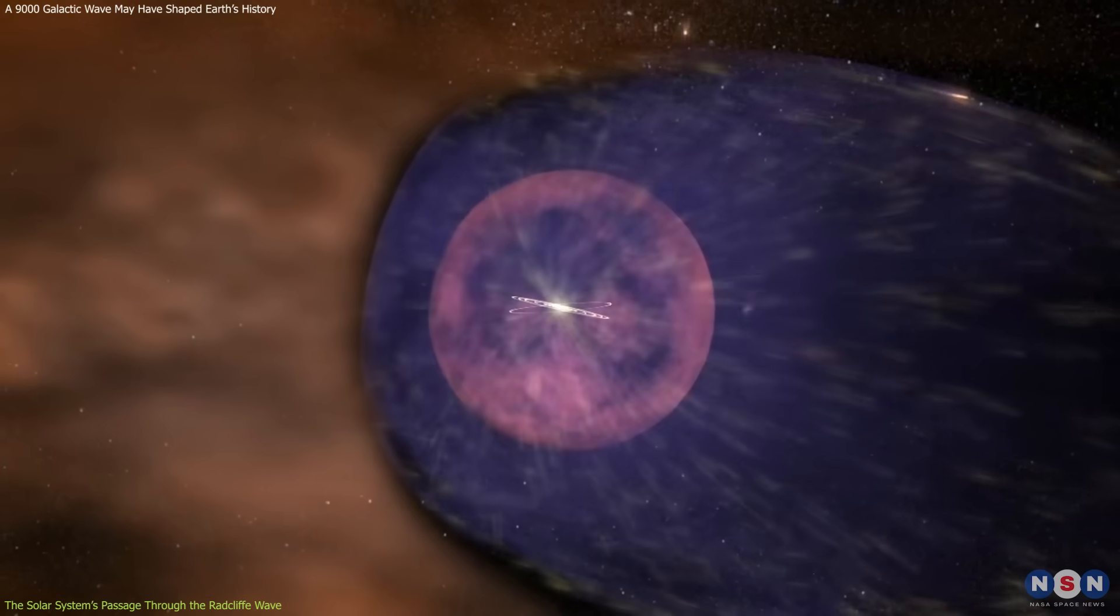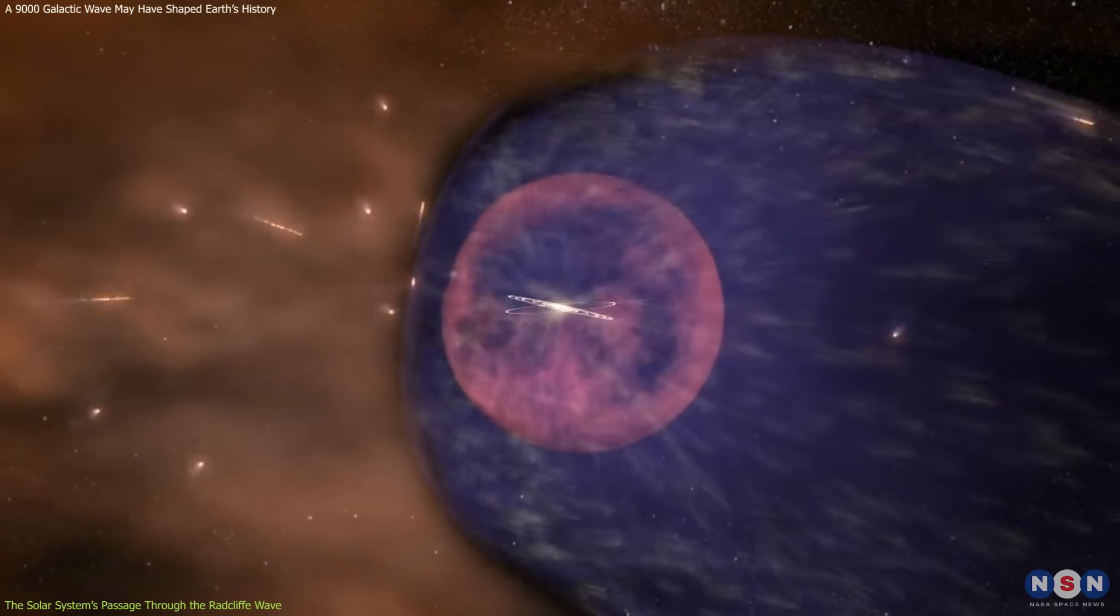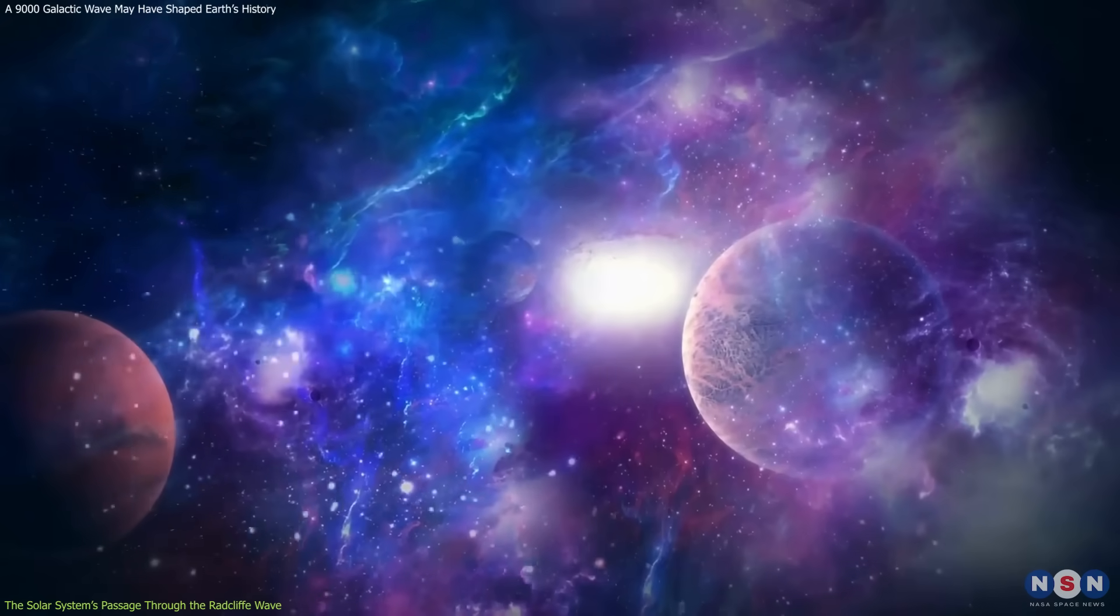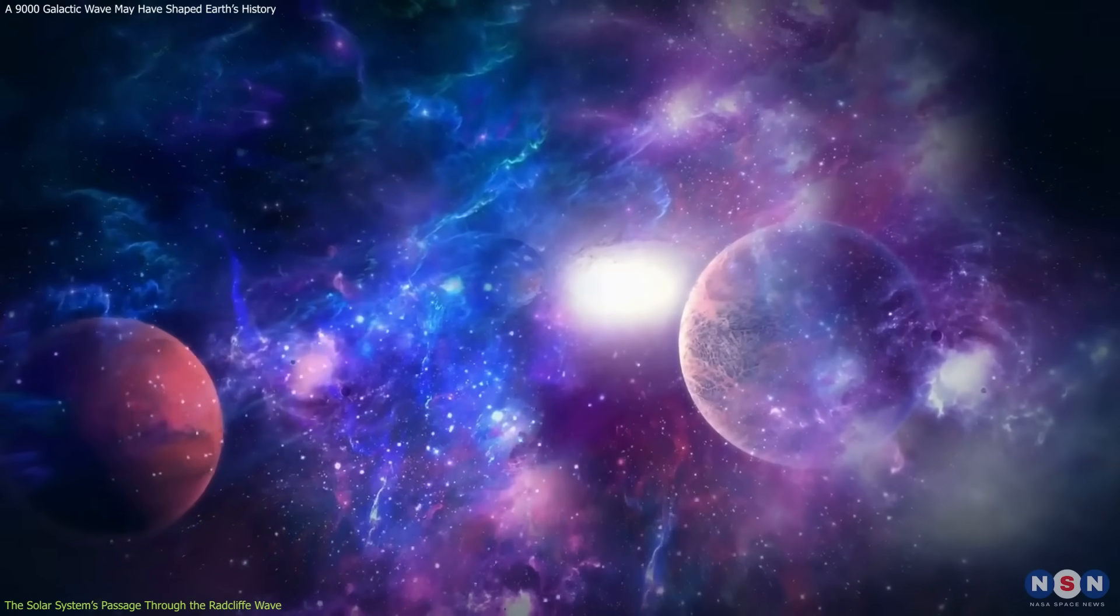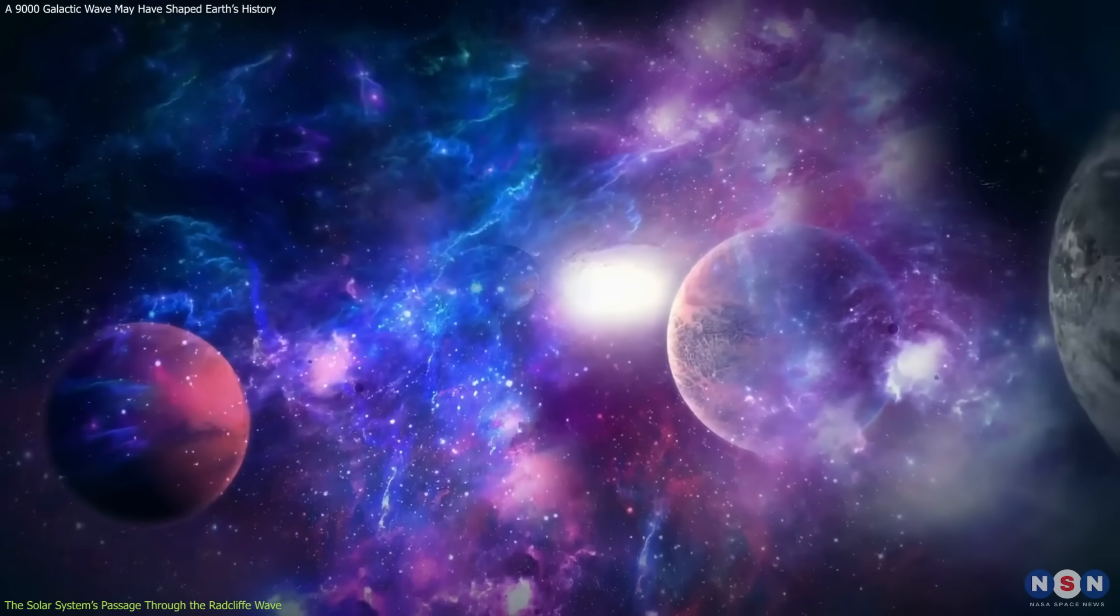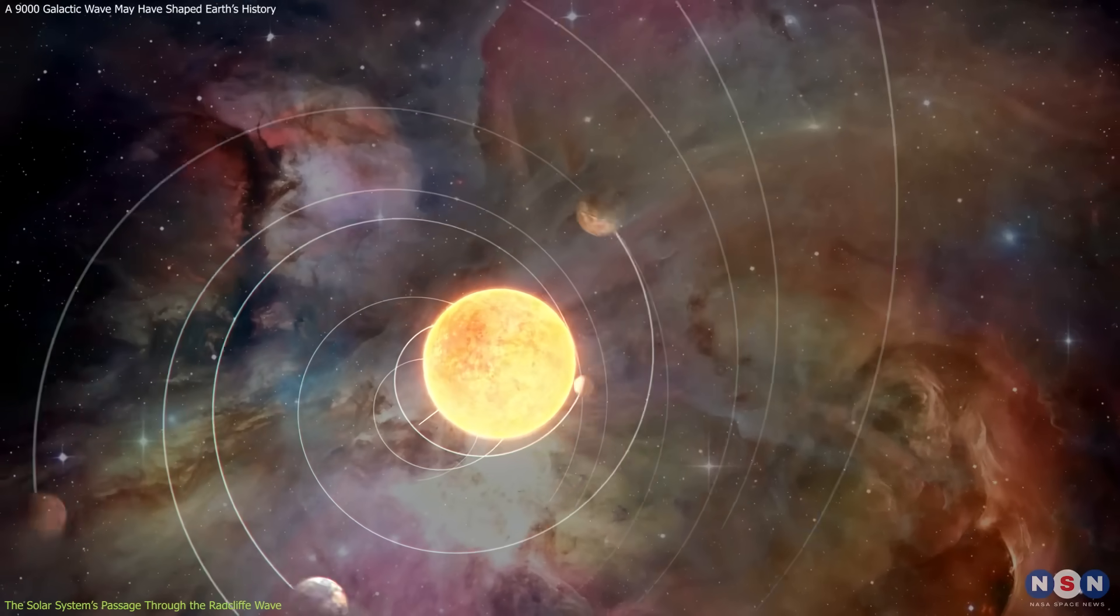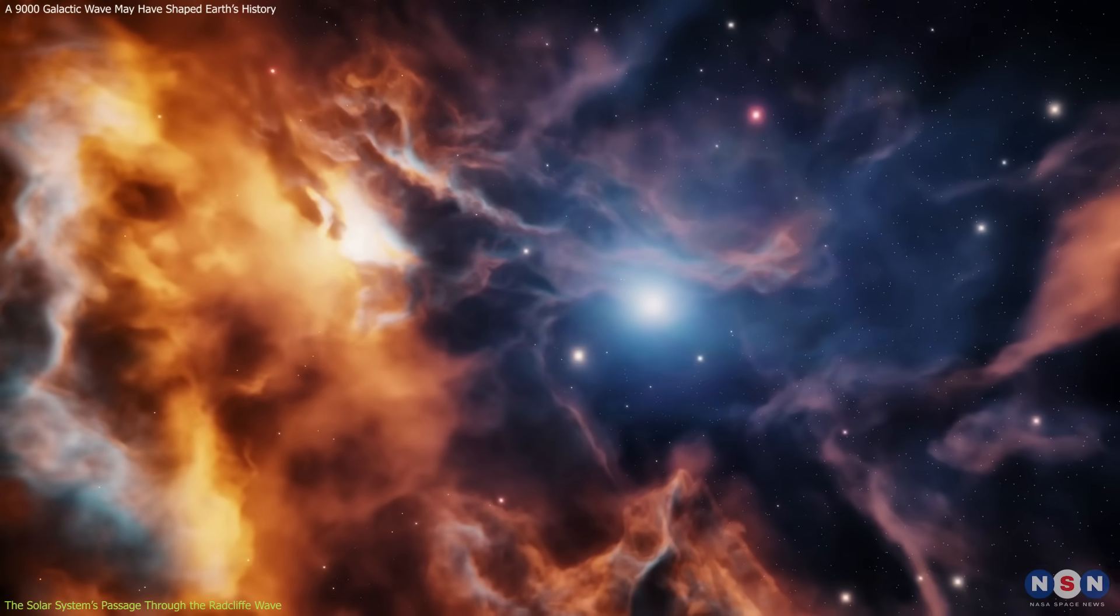A more compact heliosphere means more interstellar particles, including dust and cosmic rays, could have entered the solar system, potentially impacting planetary atmospheres, including Earth's. This discovery connects our solar system's galactic journey with changes in the interstellar environment.